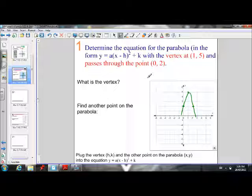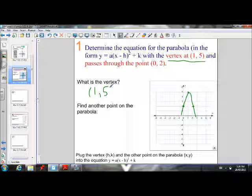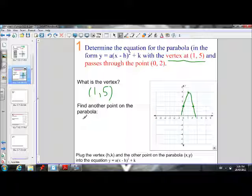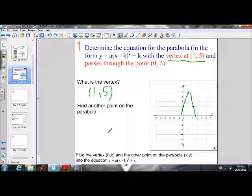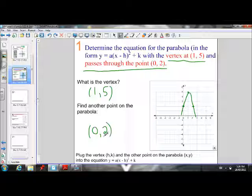The first step is to determine the vertex, and I've told you that in the question. The vertex is (1, 5). The second step is to find another point on the parabola. I've told you that it passes through point (0, 2). So here's another point: (0, 2).